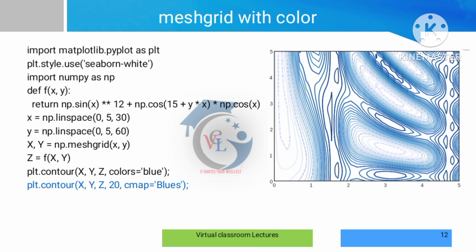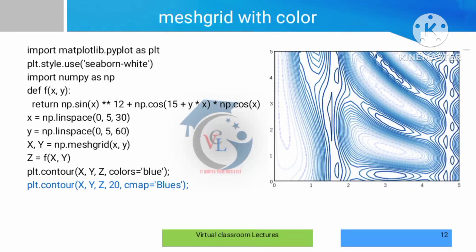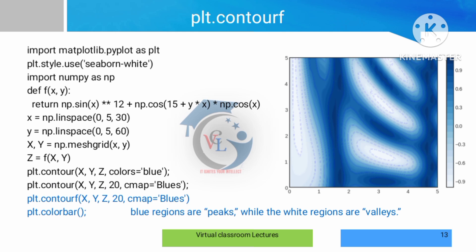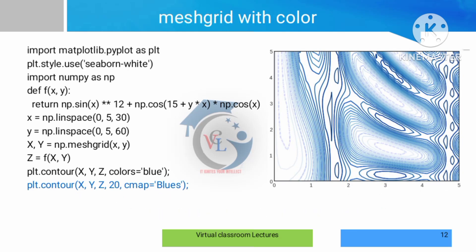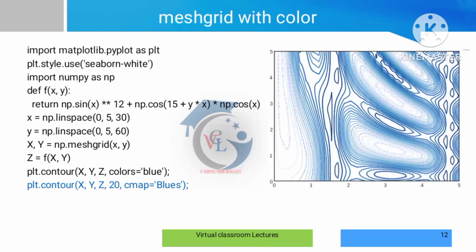Next, we find z values as a function of x and y in the calculations. Then we use plt.contour(x, y, z) to add values with a blue color line. This is the output of the contour plot.